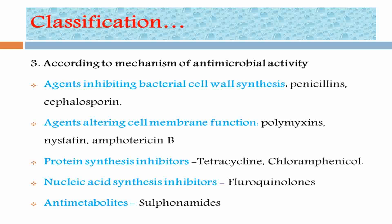Antimicrobial activity can be categorized by mechanism. Agents inhibiting bacterial cell wall synthesis act on peptidoglycan. Agents altering membrane function include polymyxin, nystatin, and amphotericin B. Protein synthesis inhibitors include tetracycline and chloramphenicol. Nucleic acid synthesis inhibitors include fluoroquinolones. There are also antimetabolite and folate synthesis inhibitors.